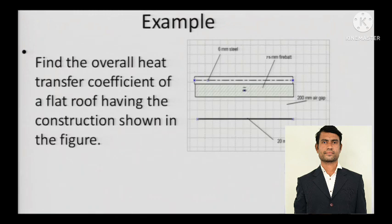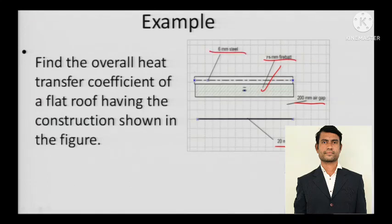There is 20 mm of ceiling board, then an air gap of 200 mm, then a fire bat which is the firewall of 75 mm, and then there's a 6 mm steel girder over it to prevent its fall. We have to calculate the overall heat transfer coefficient for this.